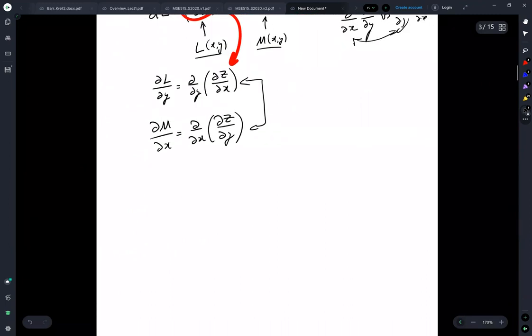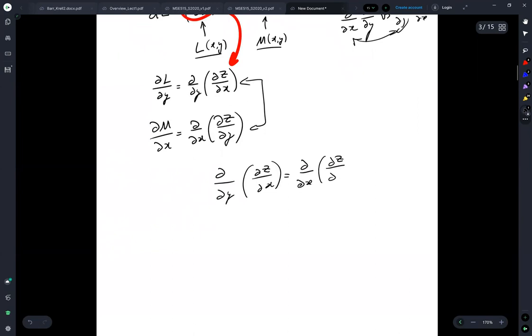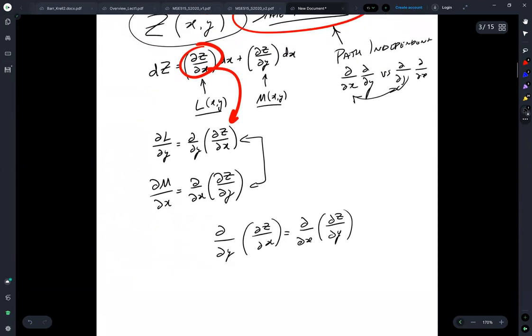So, that means that, or I shouldn't say set equal, they are symmetrically identical. So, d/dy of ∂z/∂x is equal to d/dx of ∂z/∂y. And that's a consequence of being a state variable.